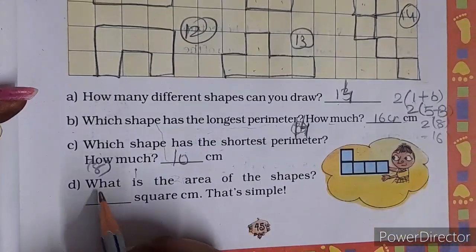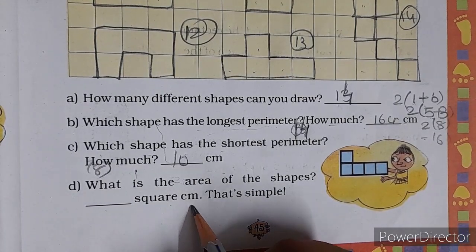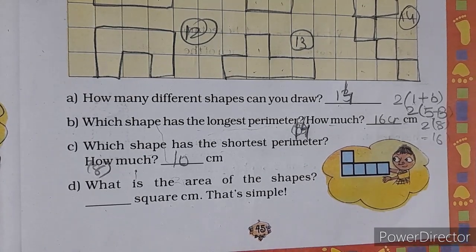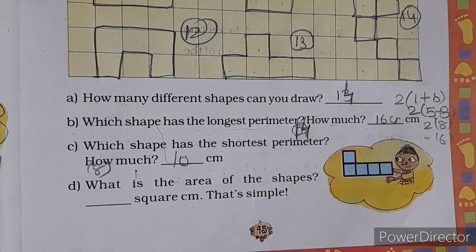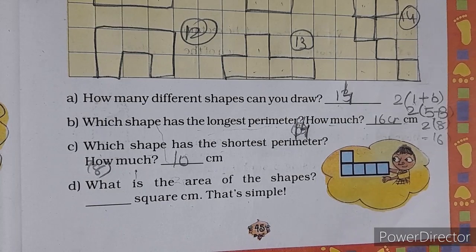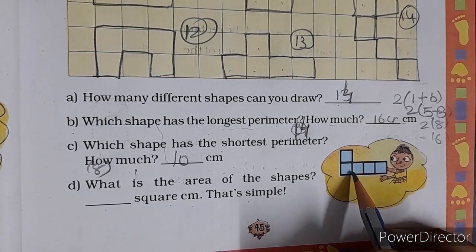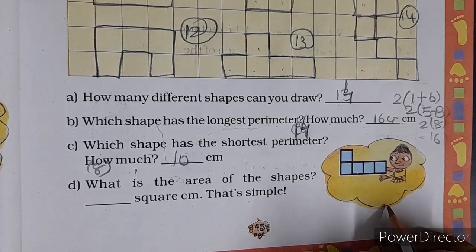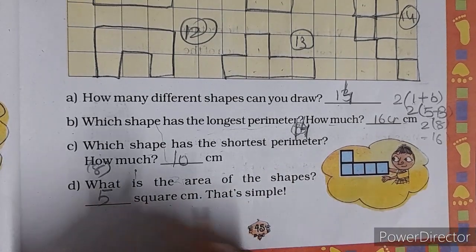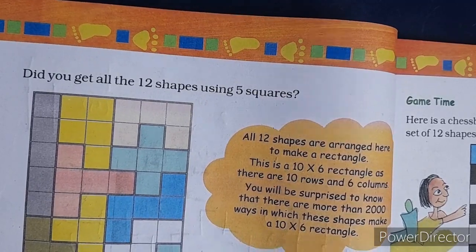What is the area of shapes blank square centimeter? That's simple. What is the area of shapes? The area of given shape is 5 square centimeter because this shape is made of five similar. The area is 1, 2, 3, 4, 5 square, so the area is also 5.